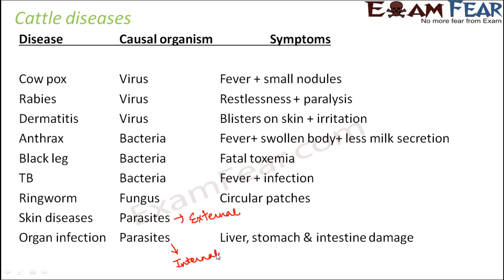Internal parasites cause infection of various organs in animals. Parasites living in the liver can make the liver infected, causing liver damage. Similarly, parasites living in the stomach or intestine can damage those organs. So organ infection can happen due to internal parasites living in those organs.